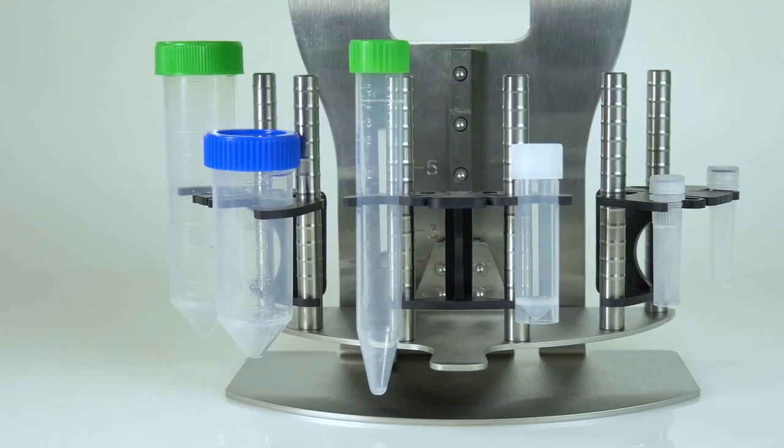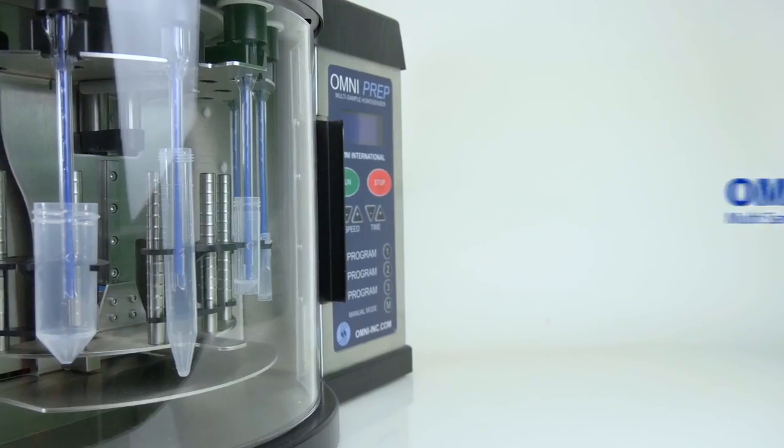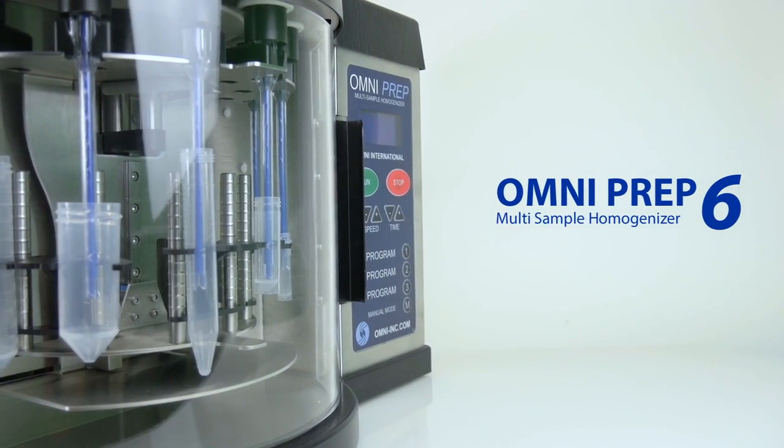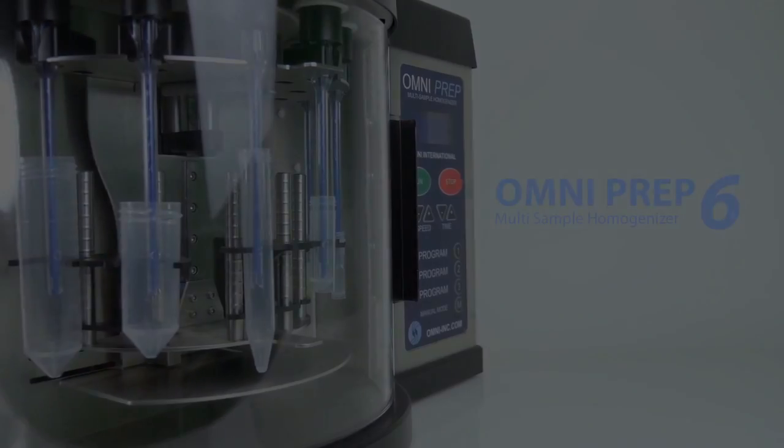With its interchangeable tube carriages, maintenance-free brushless motor, and variable speed processing, the OmniPrep 6 is a versatile and ideal front-end sample preparation platform.